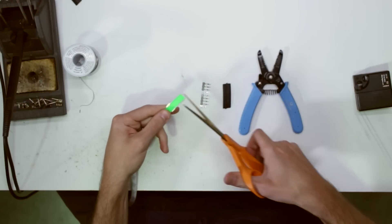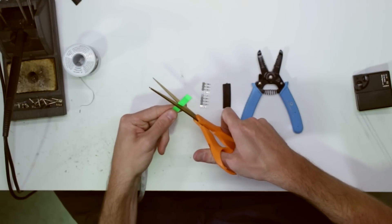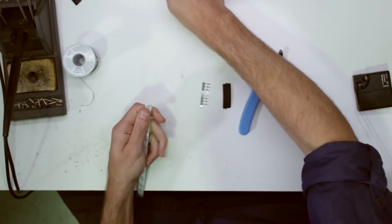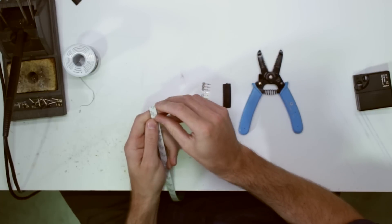The first thing that you're going to want to do is cut about an inch off of your EL tape. This will ensure that no moisture or debris got inside.